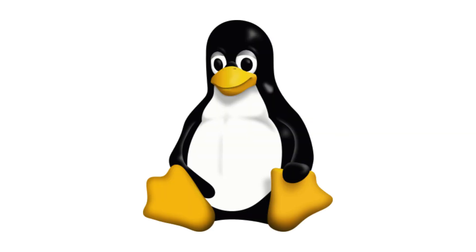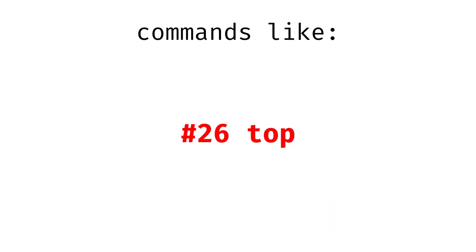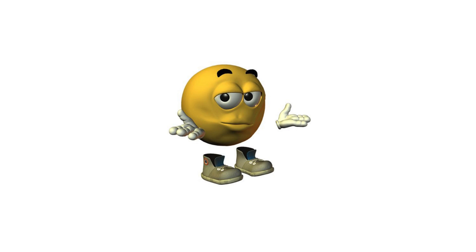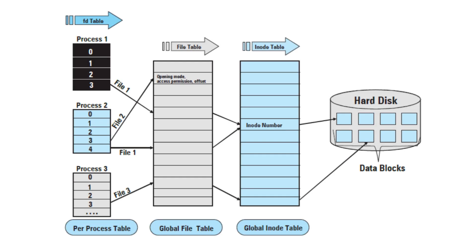To monitor what's happening on the system, commands like top or htop show you active processes, CPU usage, and memory. Internally, processes can be controlled using signals like SIGKILL or SIGTERM, which tell them to stop or restart. They also rely on file descriptors, which are IDs used by the system to keep track of open files and sockets.